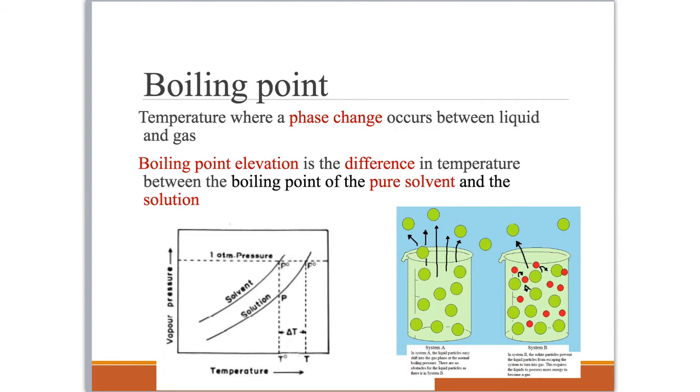The opposite is true when you have a boiling point, which is where the temperature at which you have this phase change between liquid and gas. So we're going from liquid to gas when you're talking about a boiling point. When there are particles in solution, the boiling point goes up and we call that boiling point elevation. The difference in temperature between what the boiling point would be of the pure solvent compared to that of the solution.